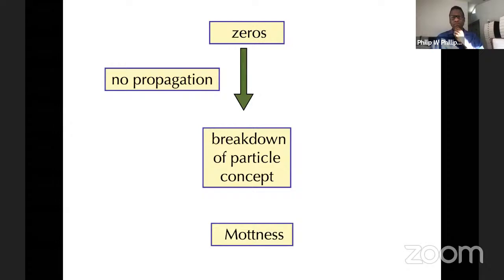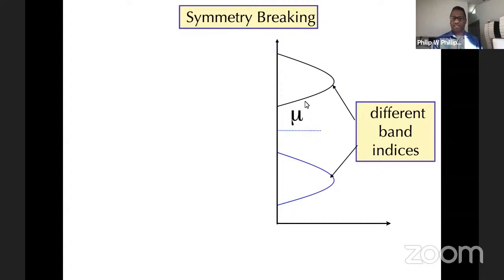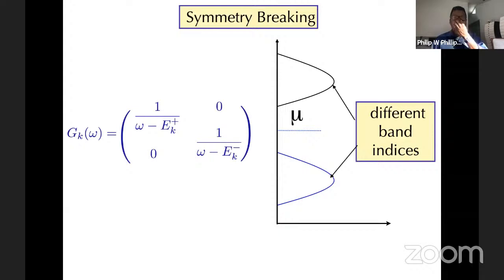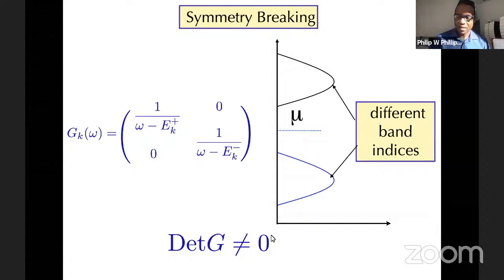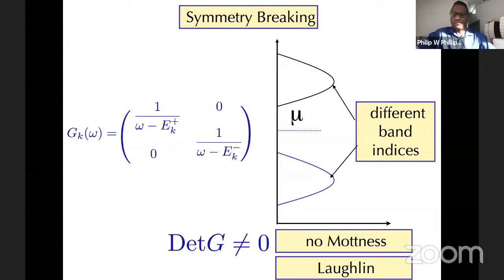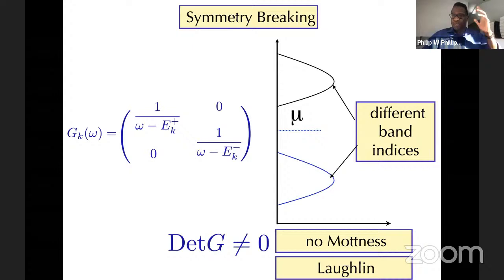Now let's look at what Laughlin was talking about — he's saying the bands are different because of some symmetry breaking. If that's the case, the Green's function determinant is just a product of resolvents that is never equal to zero, and hence there's no Mottness. So what we're after is a clear demonstration of all of these things Laughlin was complaining about, and I want to show that there's a general way of thinking about such a model, which I think also applies to what is going on in the Hubbard model.